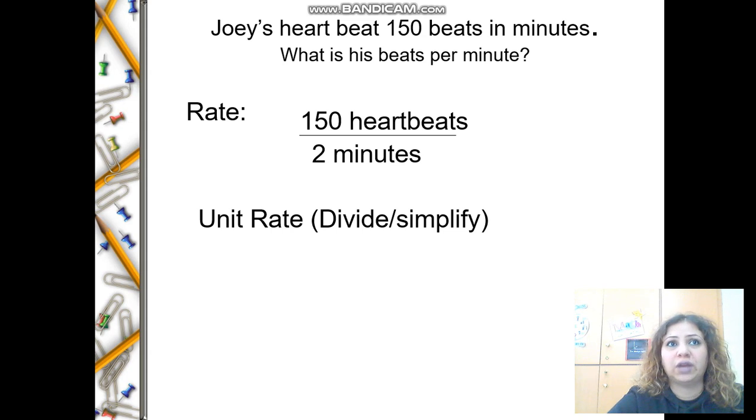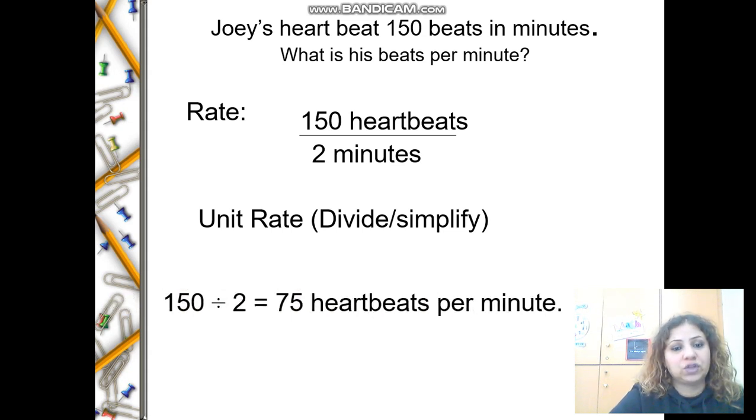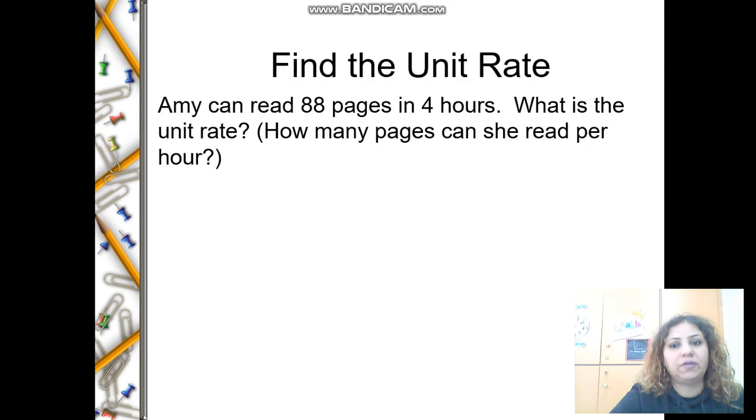First of all, I want you to write the ratio, which is 150 to 2, as you see here. It's a ratio that compares two quantities that have different units: heartbeats and minutes. I'm writing the ratio as a fraction. Then I want to find the unit rate using division or simplification. You can divide or simplify. How are you going to change 2 to 1? I am going to divide numerator and denominator by 2, so you will get 75 per unit.